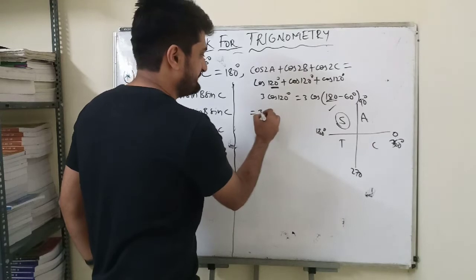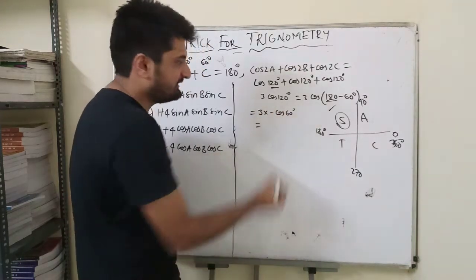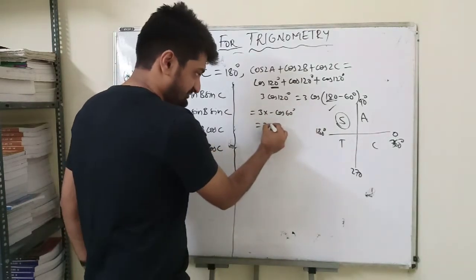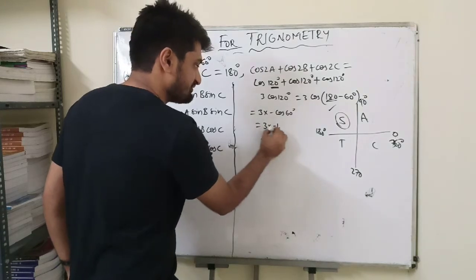So this will be nothing but 3 times minus cos60 degrees. We know that cos60 is half. So this will be 3 into minus half, which is minus 3 by 2. So the answer to the question is minus 3 by 2.